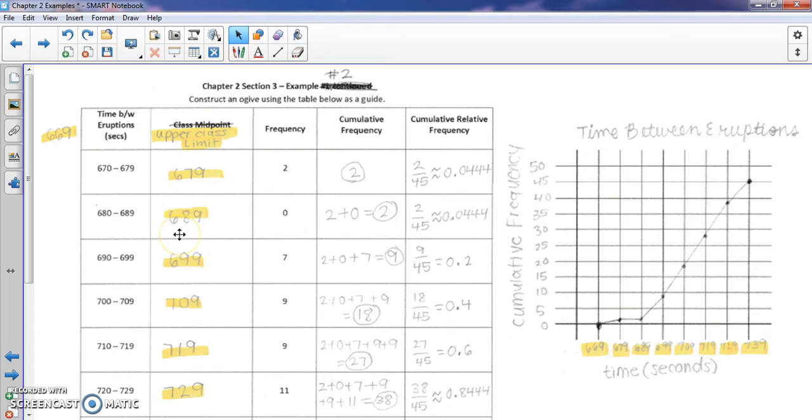And we're looking at what we call cumulative frequency and cumulative relative frequency. So an ogive is constructed with upper class limits and either the cumulative frequency or the cumulative relative frequency.